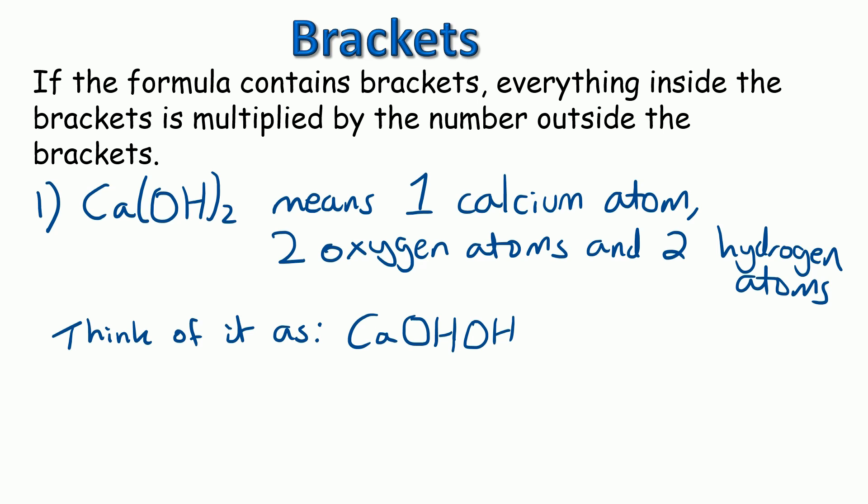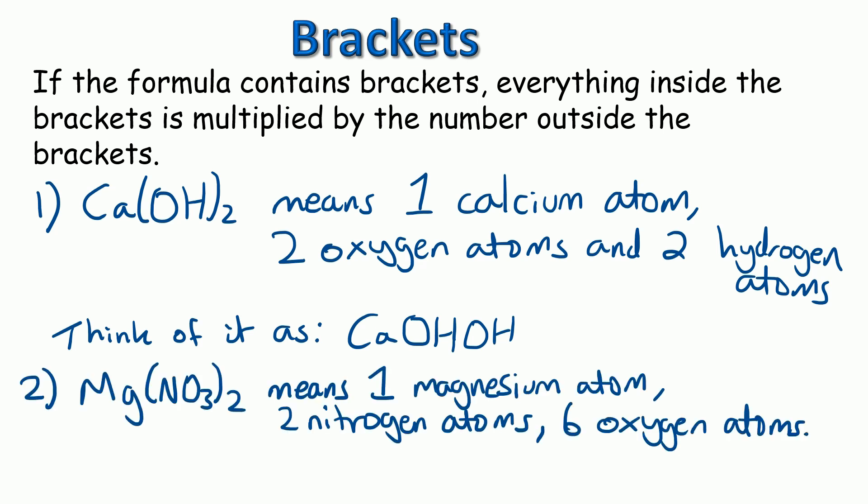Second example, Mg(NO3)2, and the NO3 is inside the brackets, so that's multiplied by two. So we've got one magnesium atom, as there's no numbers after the Mg, and then we've got two nitrogen atoms and six oxygen atoms. If you're struggling to see where we get those numbers from, think of it like this. We've multiplied the NO3 by two, so it's like saying MgNO3NO3. Hopefully it's now a little bit easier to see there's two nitrogens and six oxygen atoms.